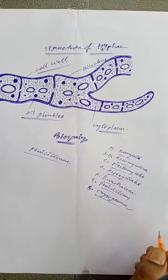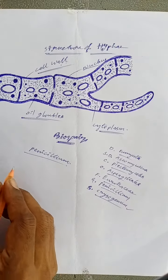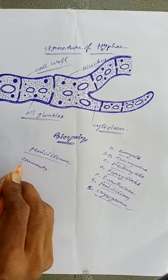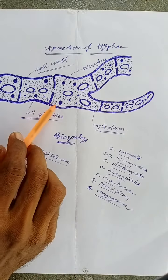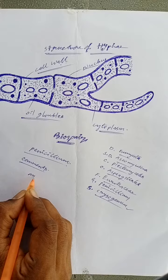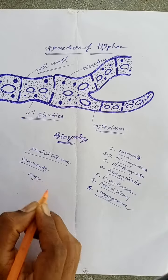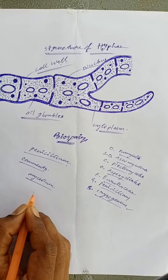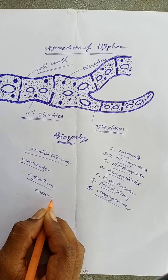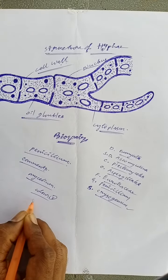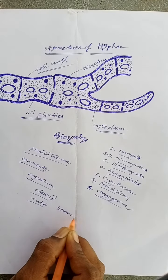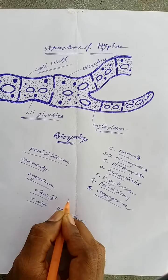Coming to the identification characters, the mycelium is well developed and copiously branched. It is composed of colorless, slender, tubular, branched and septate hyphae. The hyphae run in all directions on the substratum and become intertwined with one another to form a loose network constituting the mycelium.